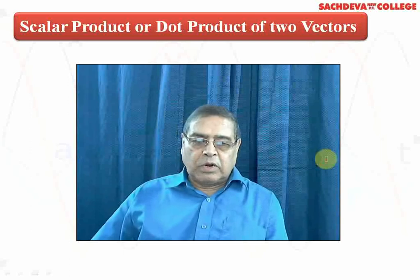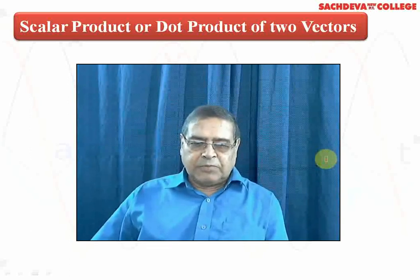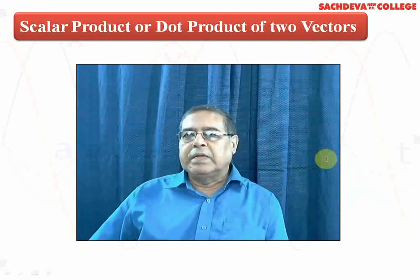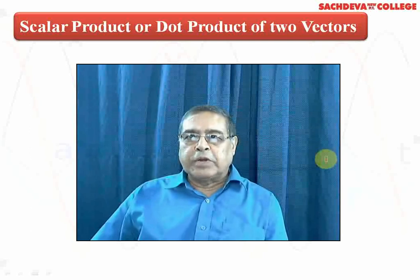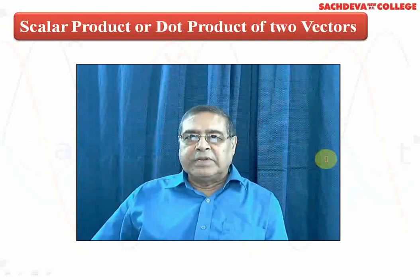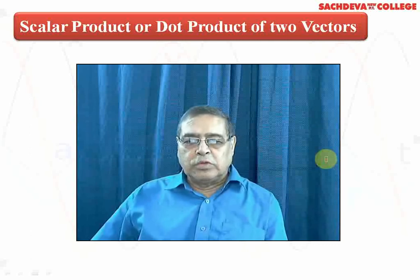When we speak of the dot product, we use some common symbols. For example, if there are two vectors A and B, and if we put arrows on the two vectors, then they will be representing the vectors. But if we remove the arrows, then they will become simply the magnitude of those vectors.